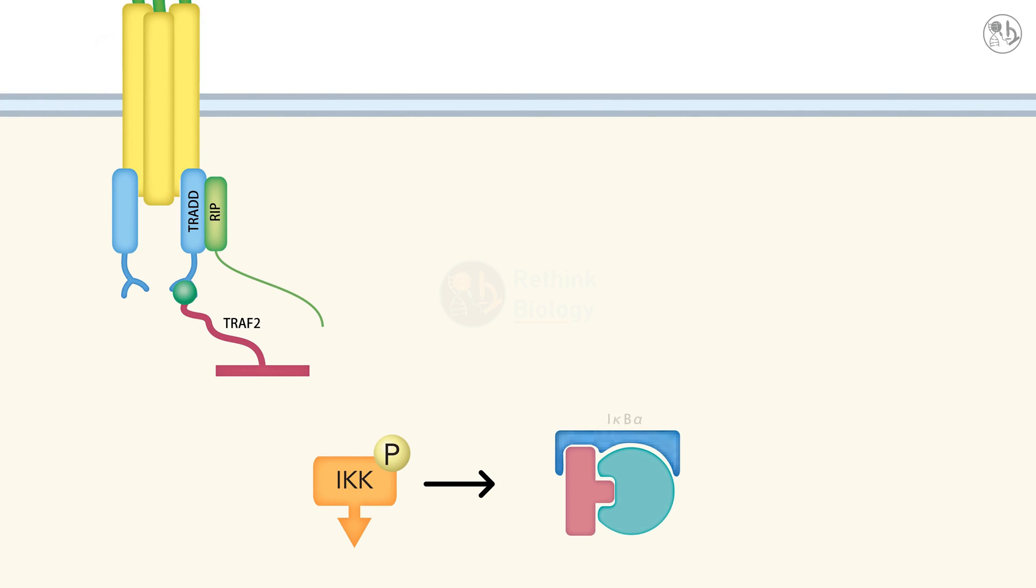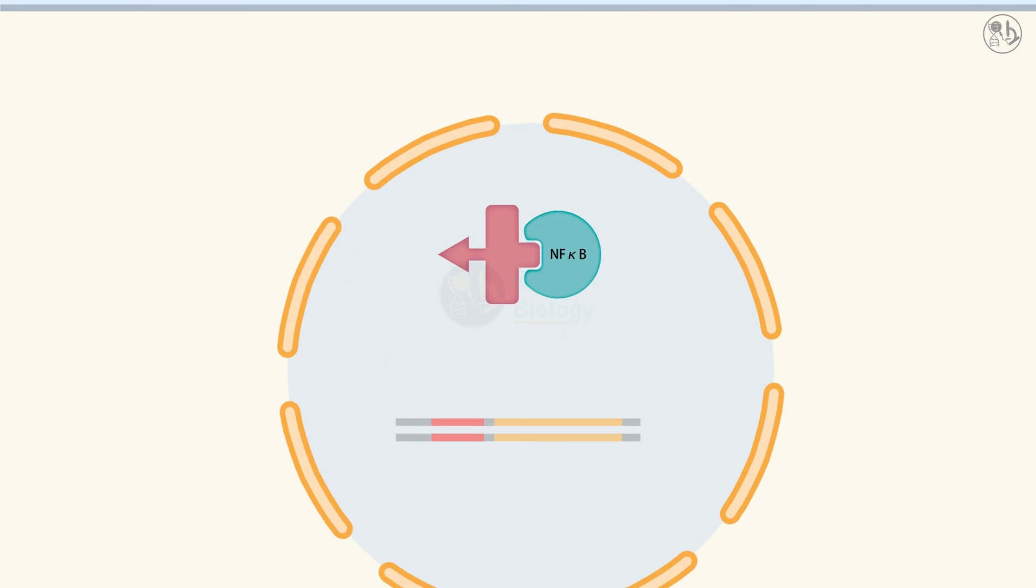IKK phosphorylates I-kappa-b-alpha, a protein that binds and inhibits NF-kappa-b, a transcription factor that regulates gene expression. Phosphorylated I-kappa-b-alpha is then degraded by the proteasome, a cellular machine that degrades unwanted proteins. This releases NF-kappa-b from its inhibition and allows it to translocate into the nucleus.